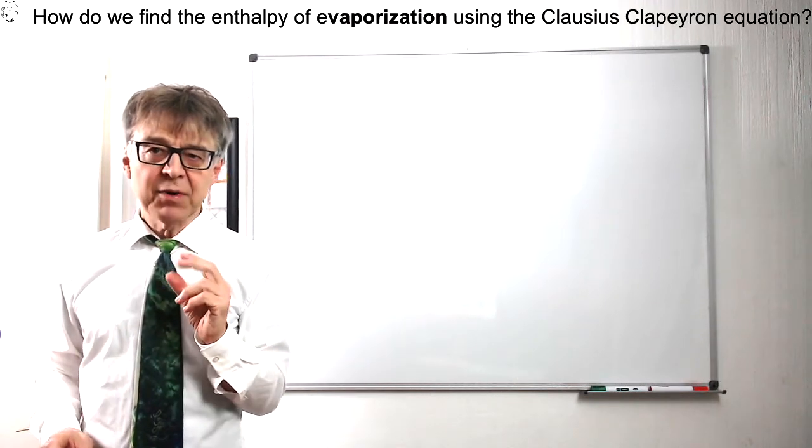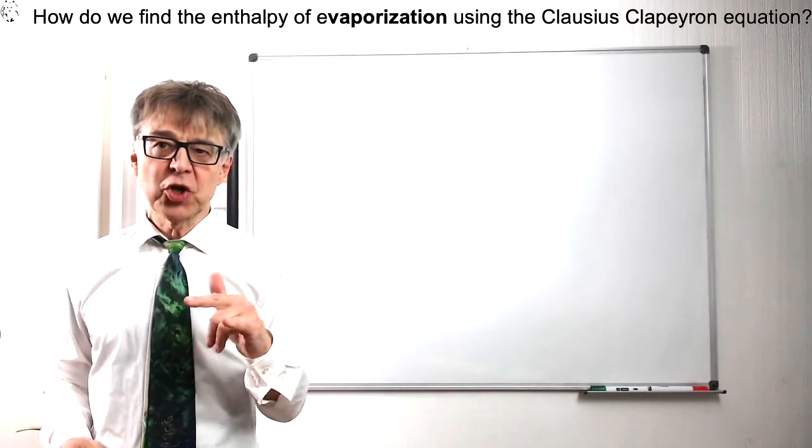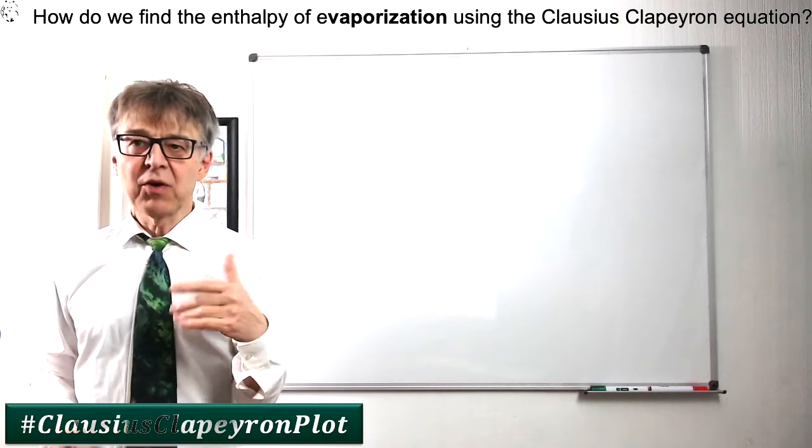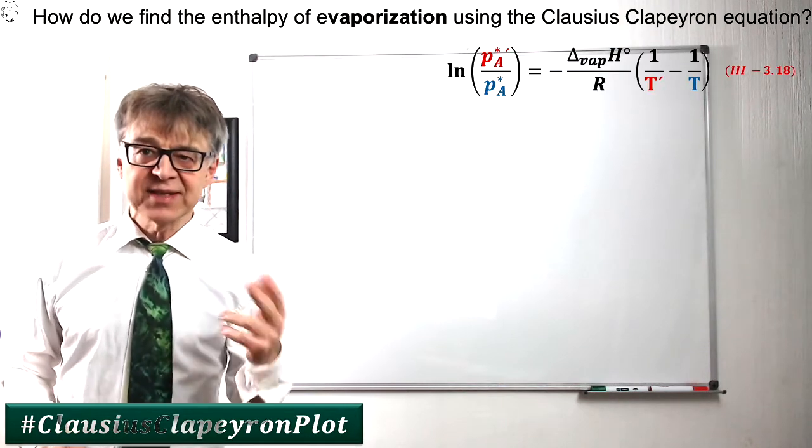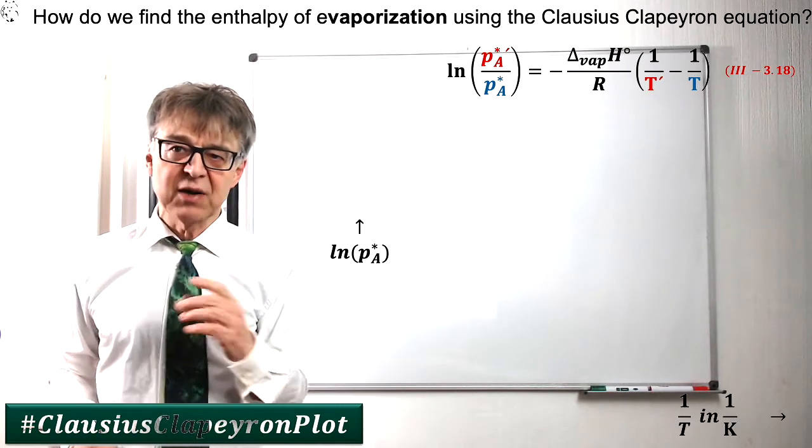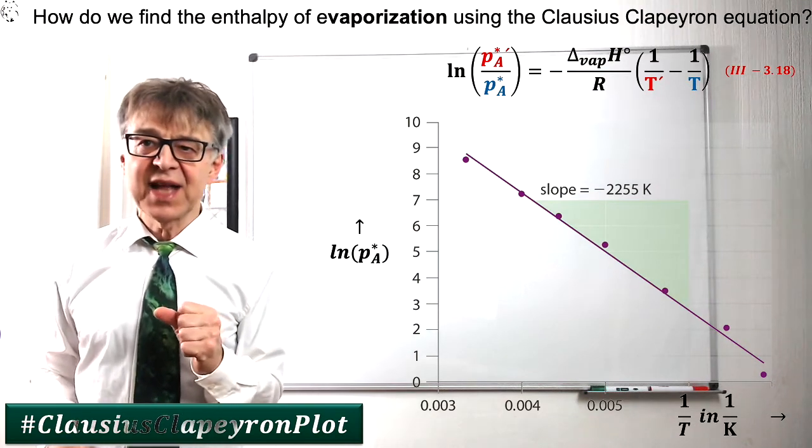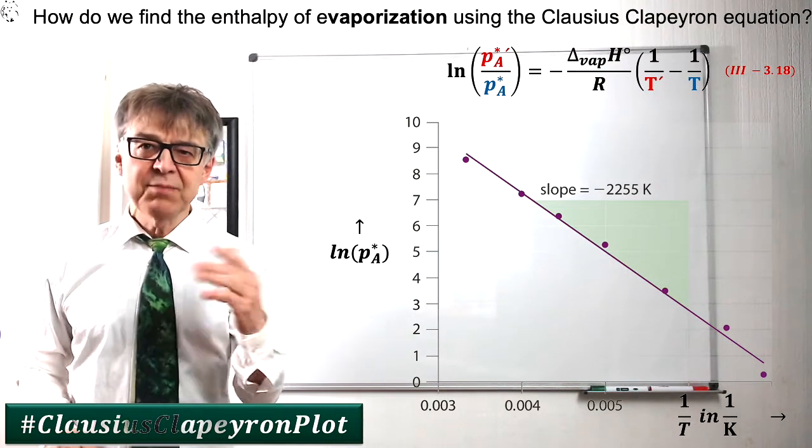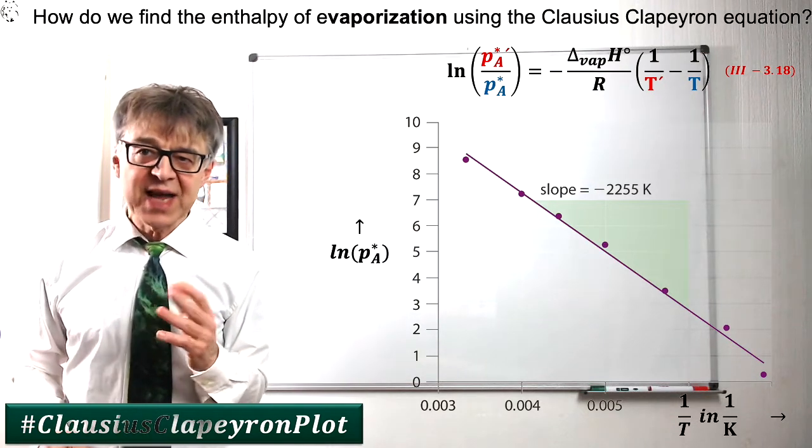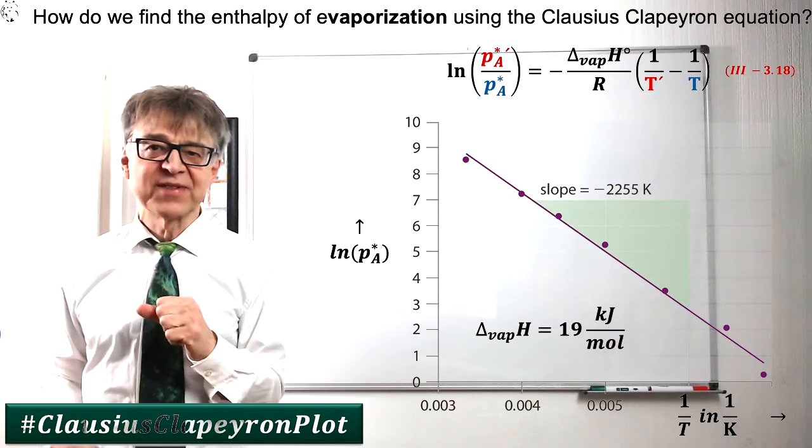With the help of Clausius-Clapeyron's equation, we may also evaluate a vapor pressure curve to get the enthalpy of vaporization. We have to plot the logarithm of the vapor pressure against the reciprocal of the absolute temperature, the so-called Clausius-Clapeyron plot, and then usually get a nice straight line with a negative slope. By simply multiplying the slope of the curve by the negative of the universal gas constant R, we may calculate the enthalpy of vaporization, the heat of vaporization.